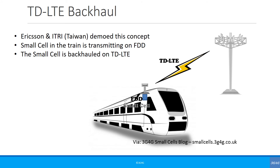Another approach trialled and demoed by Ericsson and ITRI in Taiwan is TD-LTE backhaul. If a large chunk of TD-LTE band is available, you can actually backhaul onto TD-LTE. For example, a small cell can be placed on a train that uses FDD — the backhaul is on the TD-LTE link, which is not a commonly used frequency but has a wide bandwidth, while the FDD small cell inside is on a widely used frequency. This improves coverage for passengers, avoiding constant handovers to different macrocells and optimizing power consumption and user experience.